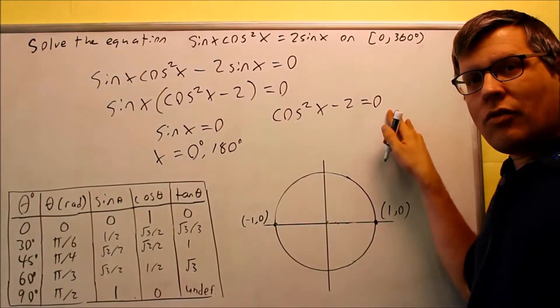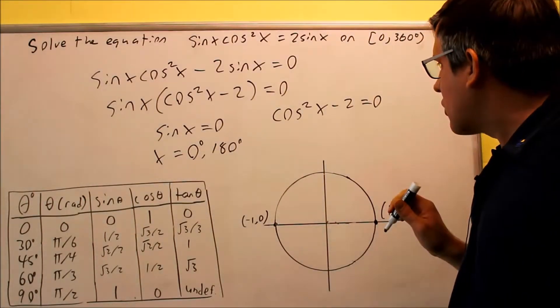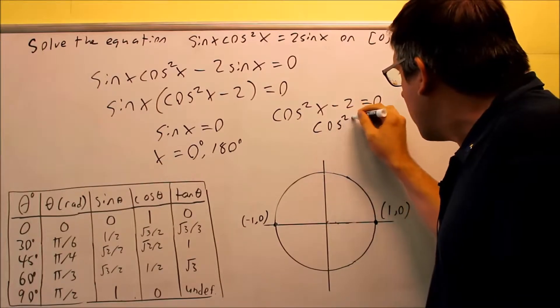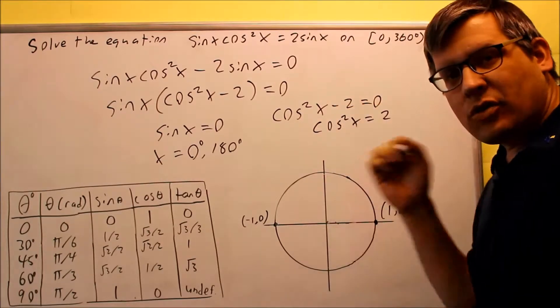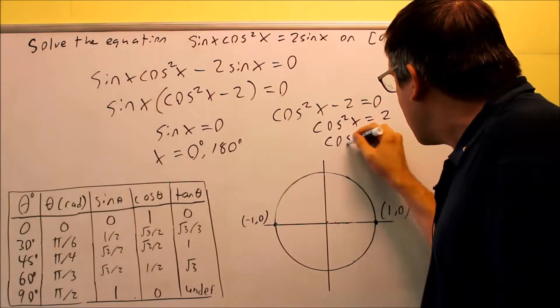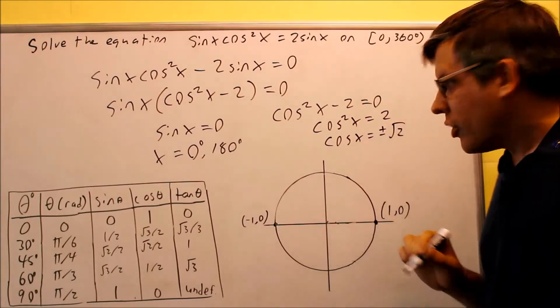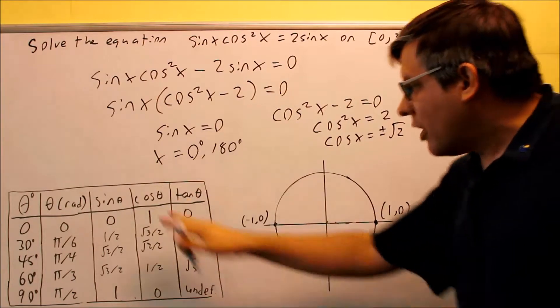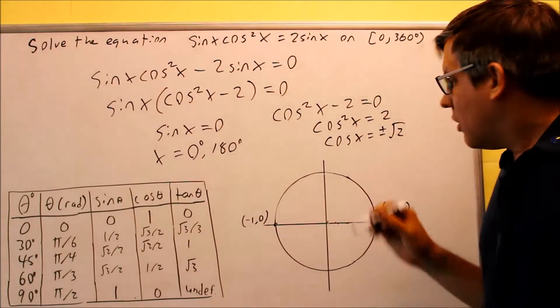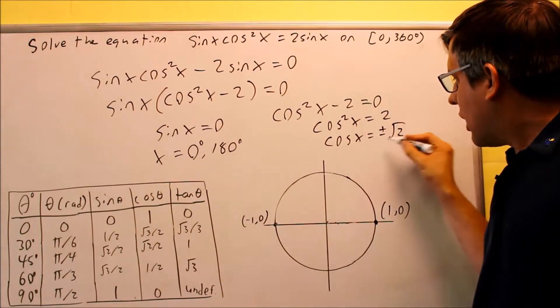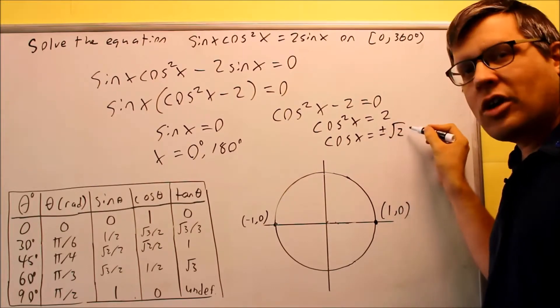Now let's take care of this one. When I solve this one, I would add two to both sides. I would get cosine squared x equals two. And I would take the square root of both sides, and I would get plus or minus the square root of two. The square root of two, that's not a value that I see on my table. So in this case, I need to be careful about the actual value I get here.